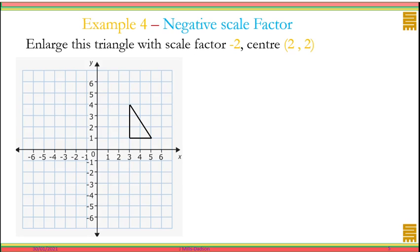Start with the center, straight lines to all the corners or the vertices. But instead of doubling each of the lines, we're still gonna double each of the lines, but on the opposite side of the center. That's the difference.